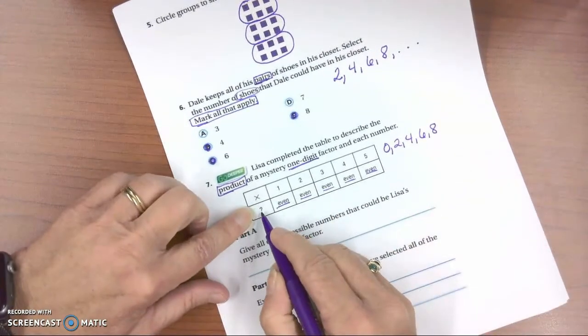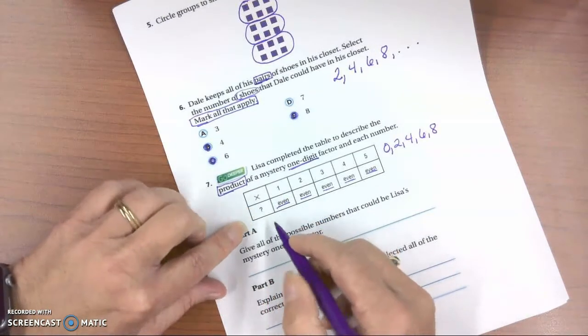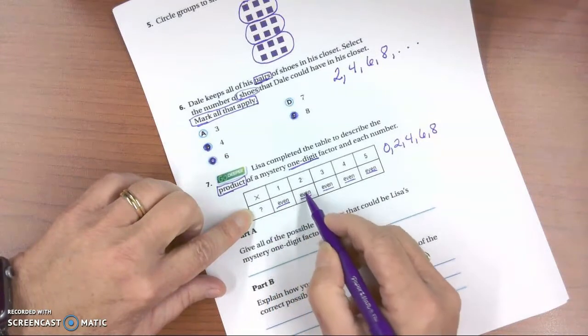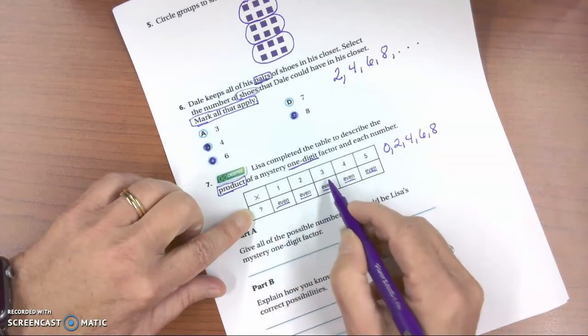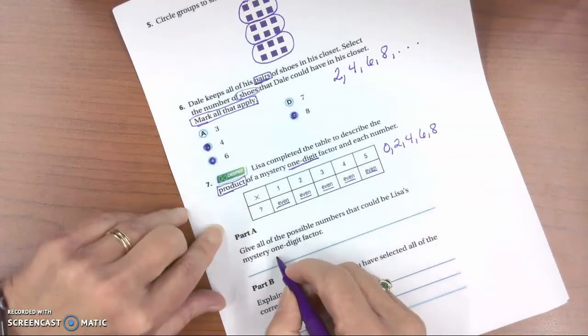So can we put a 1 here? 1 times 1 is 1. Nope, that's odd. So that wouldn't work. What about a 2? 2 times 1 is 2, 2 times 2 is 4, 2 times 3 is 6, 2 times 4 is 8, 2 times 5 is 10. So 2 will work.